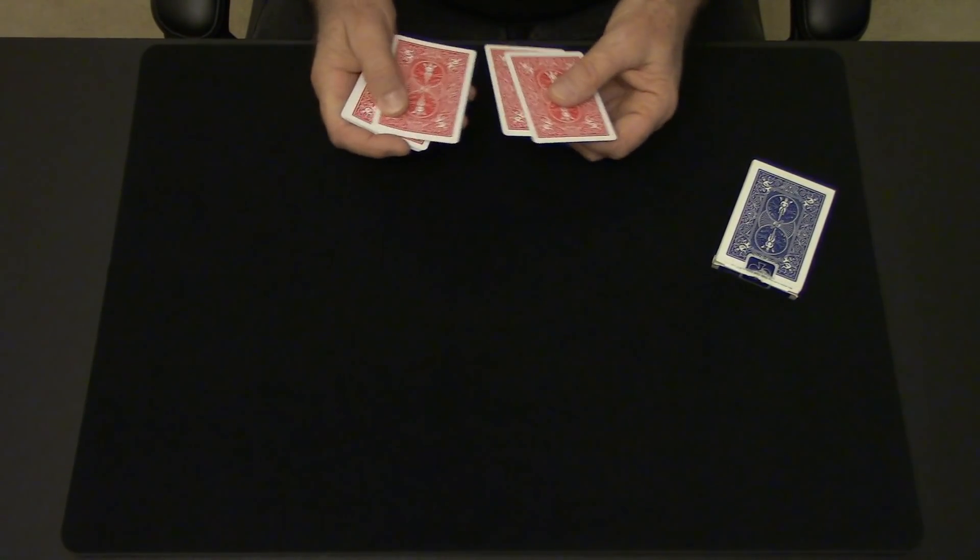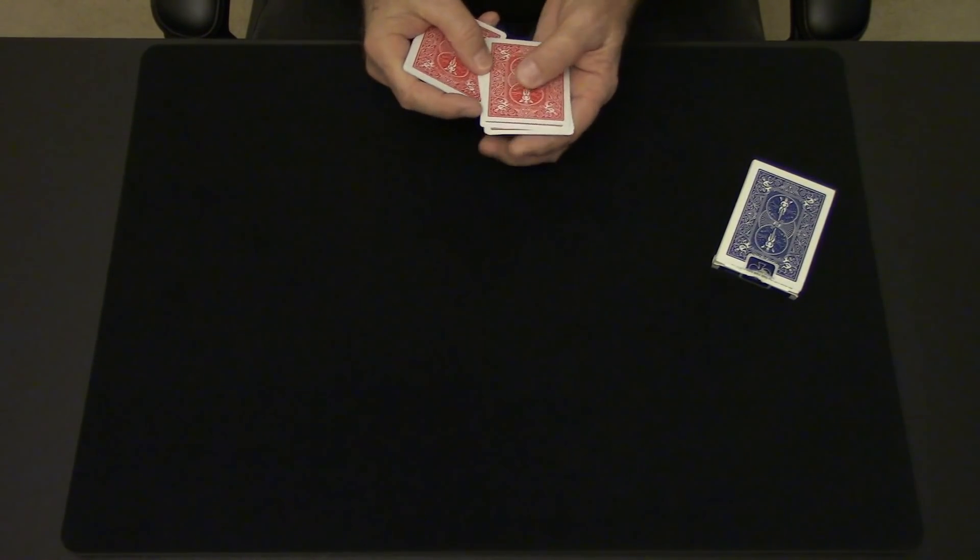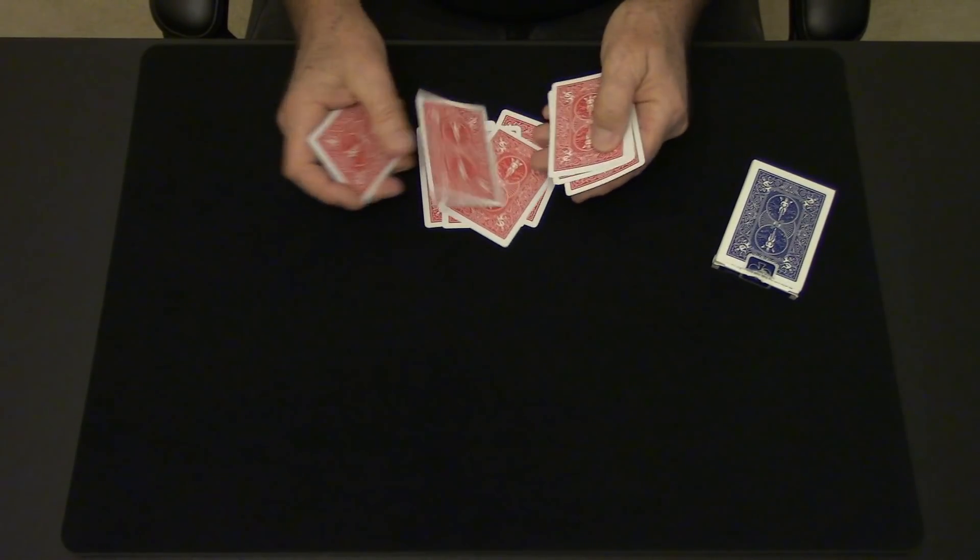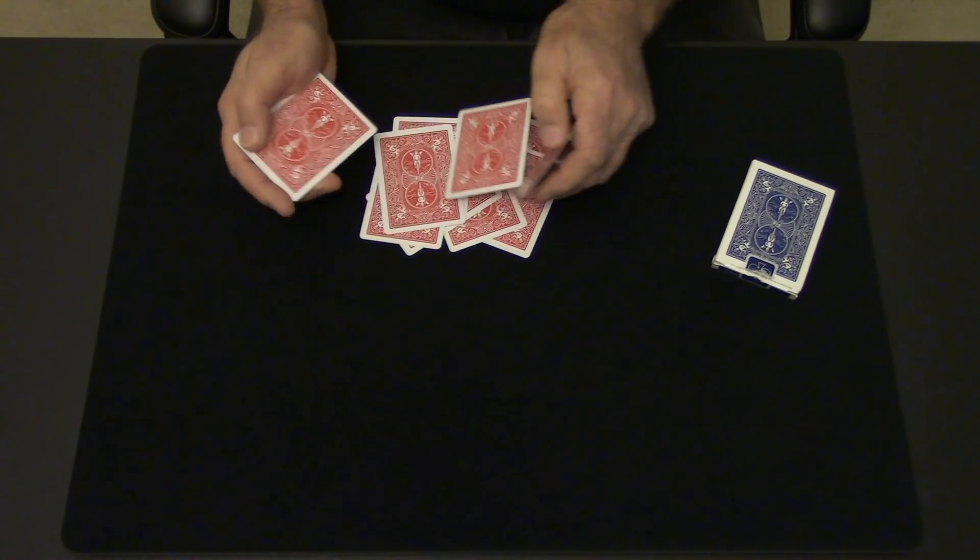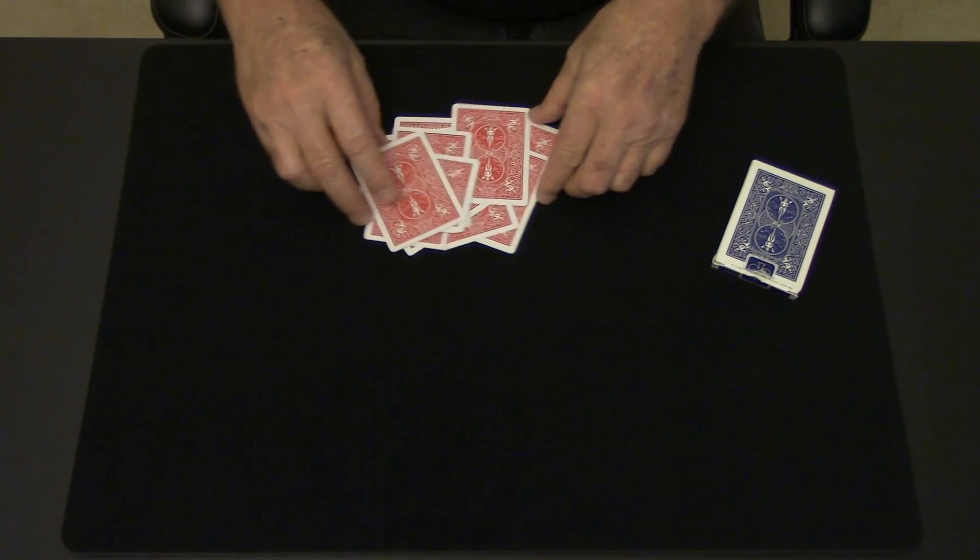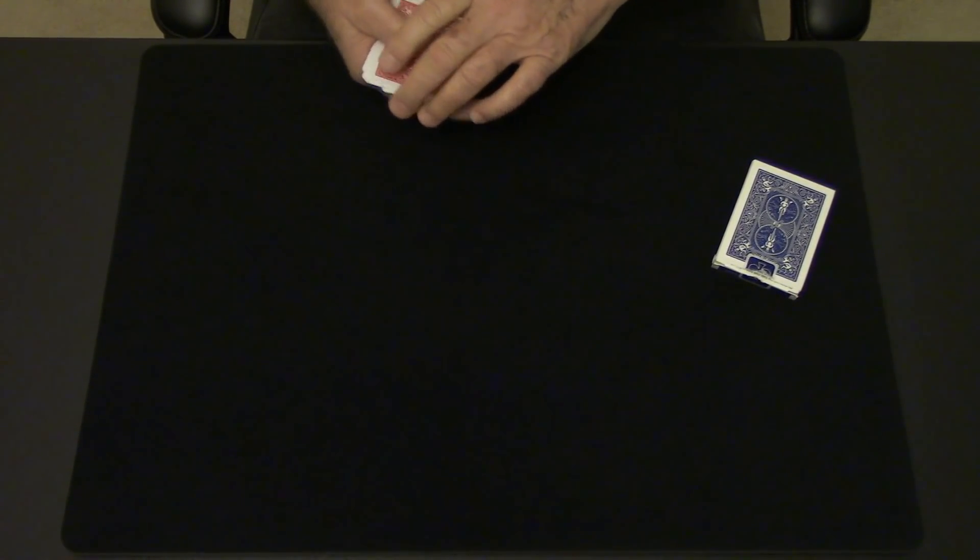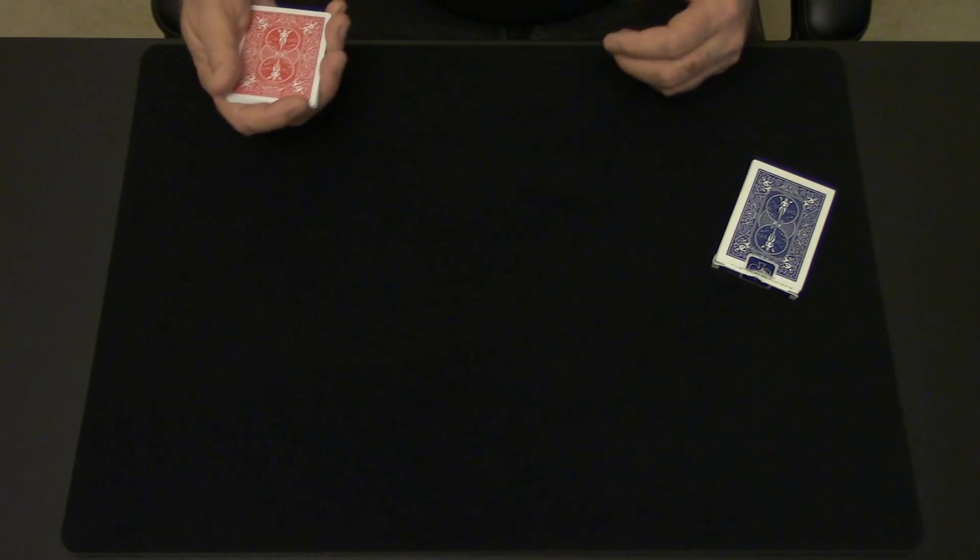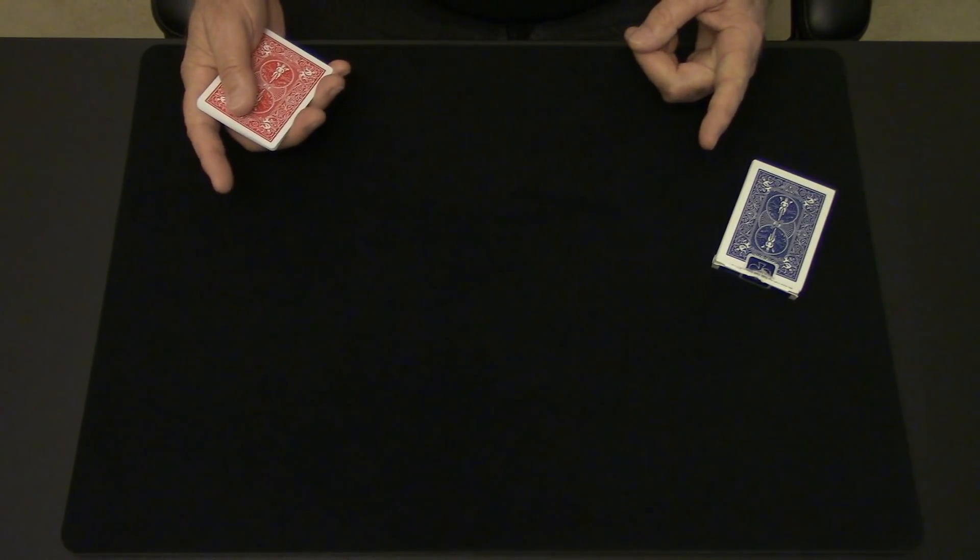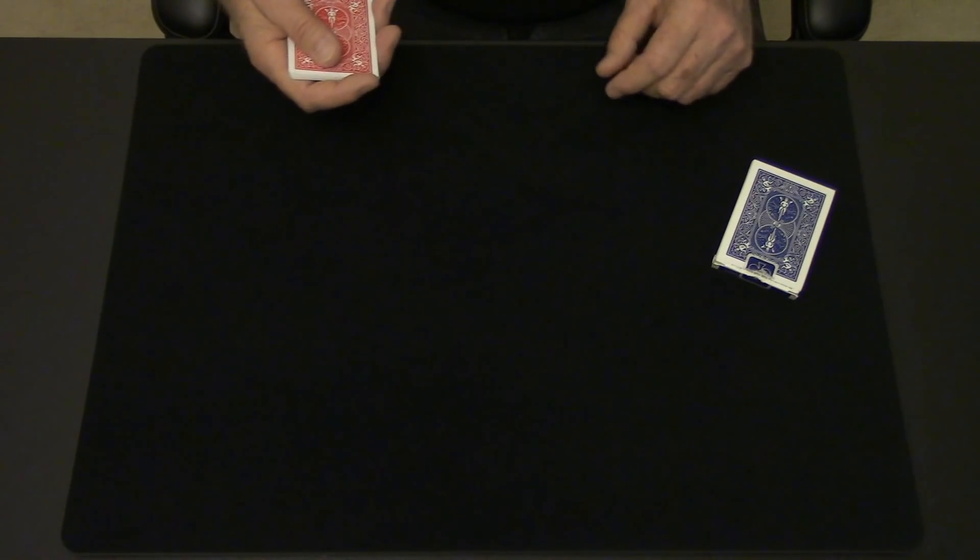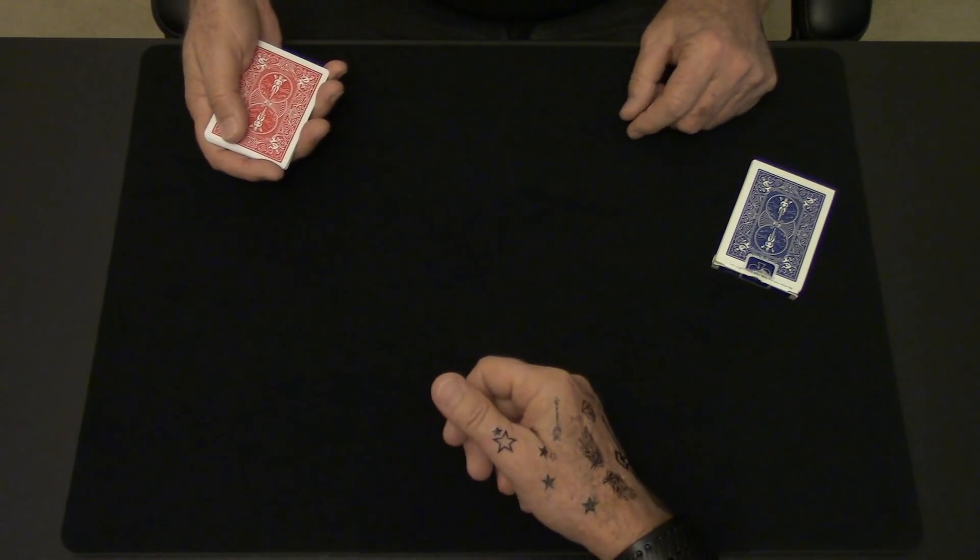I'm going to mix the red cards using a shovel shuffle. That's where you shovel cards off from the left and right. Or shuffle shuffle, shuffle shuffle. It mixes the cards. I want to show you another one called a randomizer shuffle. It randomizes the cards. It's super easy even if you're unfamiliar with handling cards.